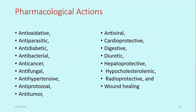Pharmacological research reveals similar actions as described in classical texts. Garlic is antioxidant, anti-parasitic, anti-diabetic, anti-bacterial, anti-cancerous, anti-fungal, anti-hypertensive, anti-protozoal, anti-tumor, and anti-viral. It is cardioprotective — being one of the most used herbal products for cardioprotection. It is also digestive, diuretic, hepatoprotective, hypocholesterolemic, and reduces hyperlipidemia, with radioprotective and wound healing properties.